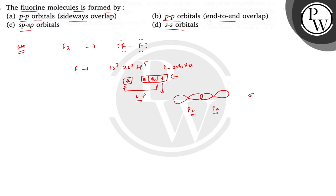That will lead to the sigma bond between F and F in the F2 molecule. So the correct option is pp orbital end-to-end. The correct option is (b). I hope you understood well. Best of luck.